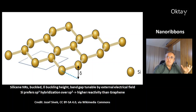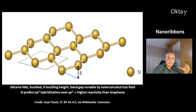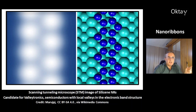This is a picture of silicene nanoribbons. They differ from graphene nanoribbons because they are buckled — delta is the buckling height. Their band gap is tunable by an external electrical field. The larger silicon atom prefers sp3 hybridization over sp2. Silicene nanoribbons are known to be more reactive than graphene nanoribbons and are candidates for valleytronics — semiconductors with local valleys in the electronic band structure.